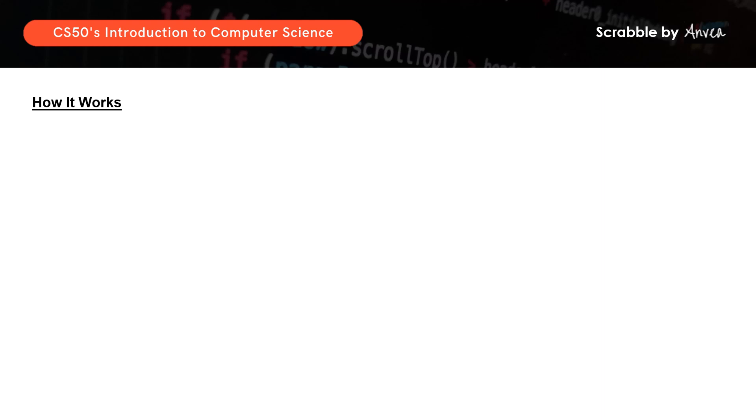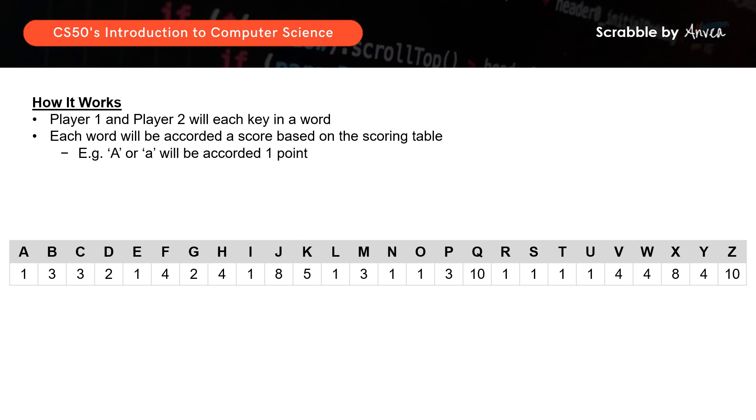So in this lab, we want player 1 and player 2 to each key in a word. Each word will then be given a score based on its letters. So for example, based on the table, the letter A will be accorded 1 point, the letter B will be accorded 3 points, and so on. So the player with the highest scoring word wins.